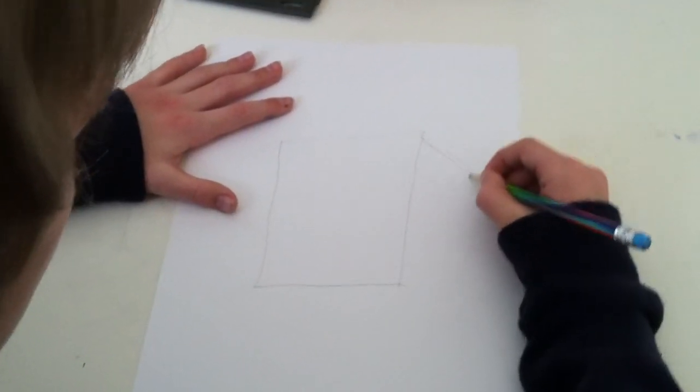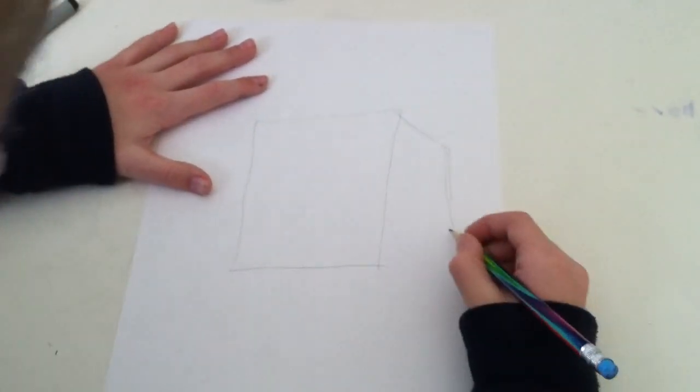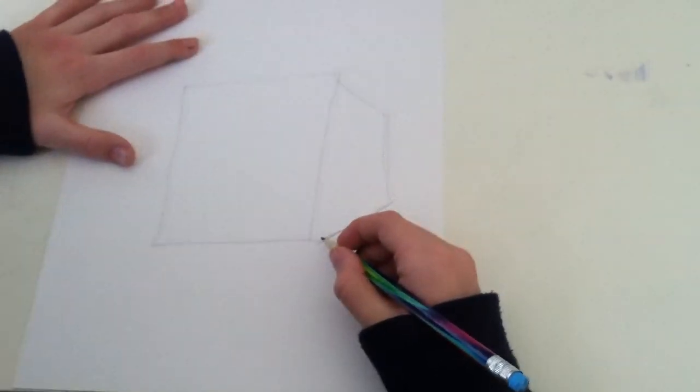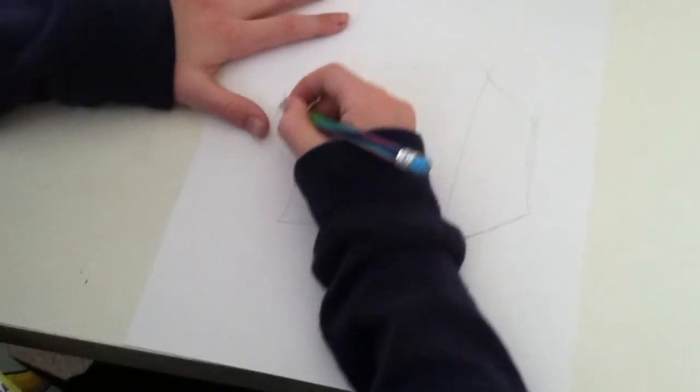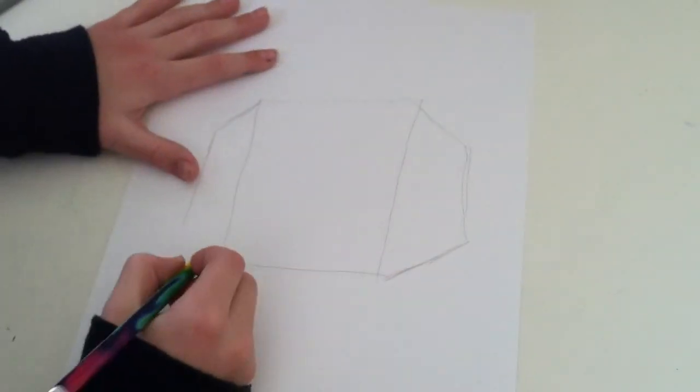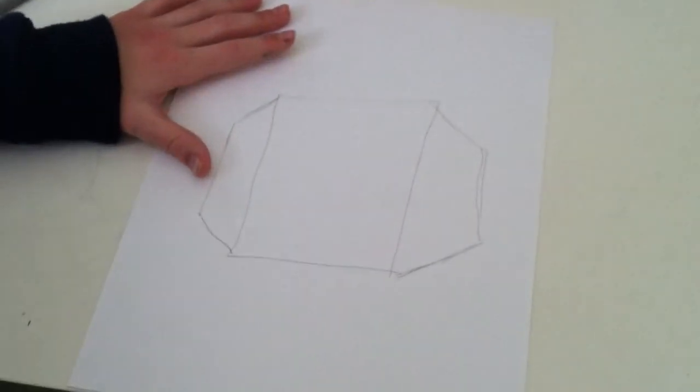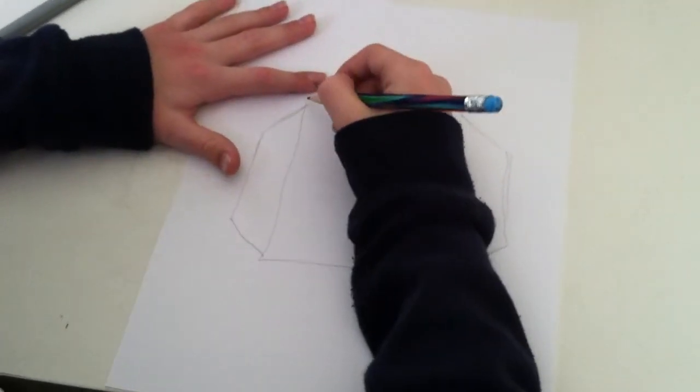And then draw lines like this. Ignore the background. And then draw like this, just on both sides. Like a weird little elephant. It kind of looks like an elephant, but that's okay.